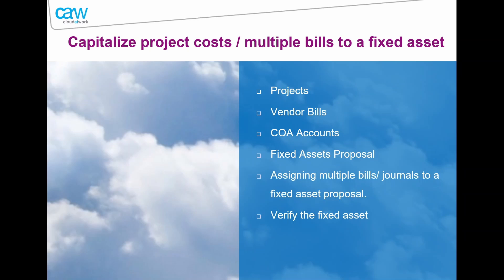We assume that you already have the fixed asset register bundle, that you've updated it to its latest version, and that you are entering costs either directly to fixed asset accounts — or entering various expenses that you then need to total and convert into a fixed asset. To do this, first the fixed asset feature needs to be enabled on NetSuite.